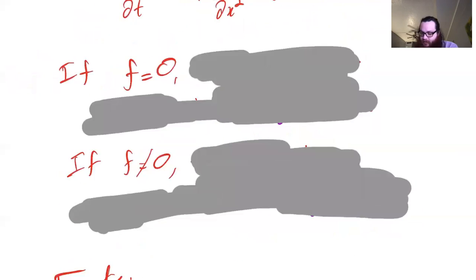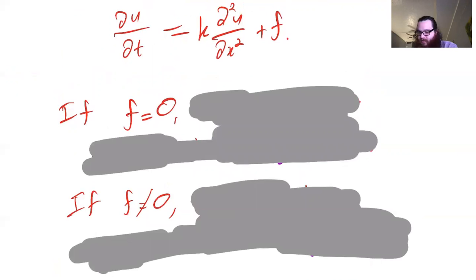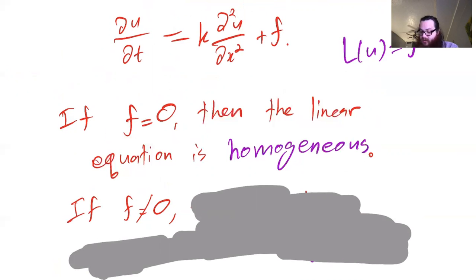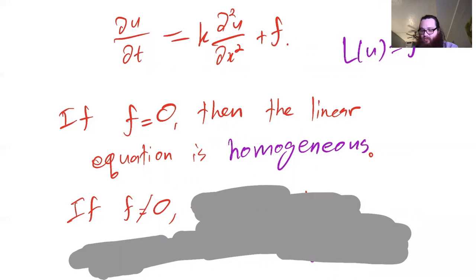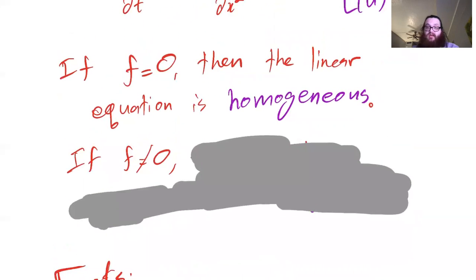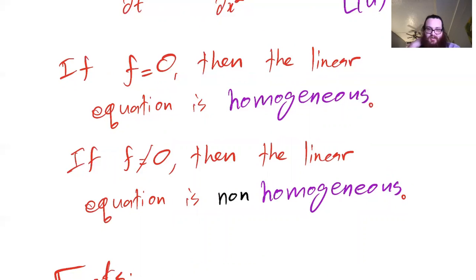Here are two questions about L(u) = f. What if f is zero? In that case, we call the resulting linear equation homogeneous (or homogeneous — I'll jump back and forth, but they refer to the same concept: f = 0). What if f is not zero? Then we call the linear equation non-homogeneous.